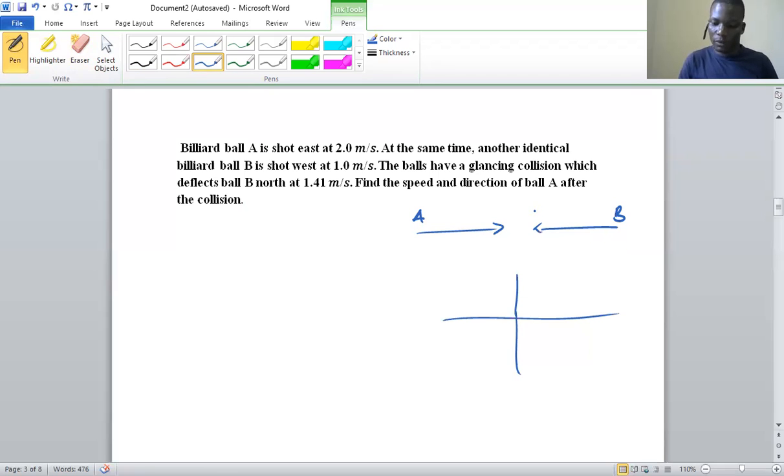After collision, we have been told that ball B moves to the north with that speed. Now we need to find where ball A is and in what direction.